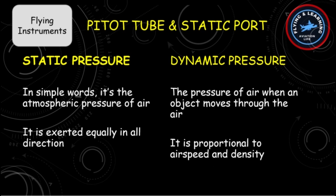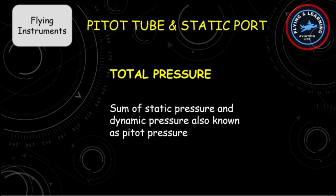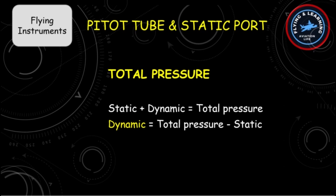Dynamic pressure is the pressure of air when an object moves through the air. It is directly proportional to airspeed and density. The pitot tube gives you the total pressure, which is the sum of static and dynamic pressure — also known as pitot pressure. If we subtract static pressure from total pressure, we will get dynamic pressure.